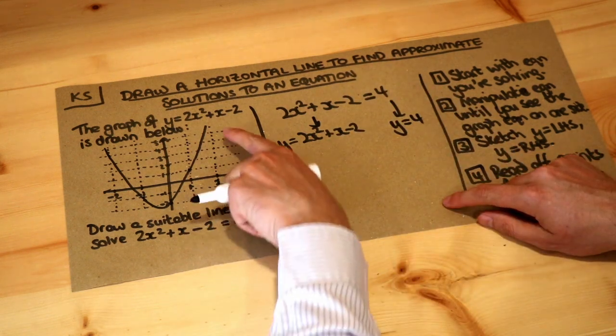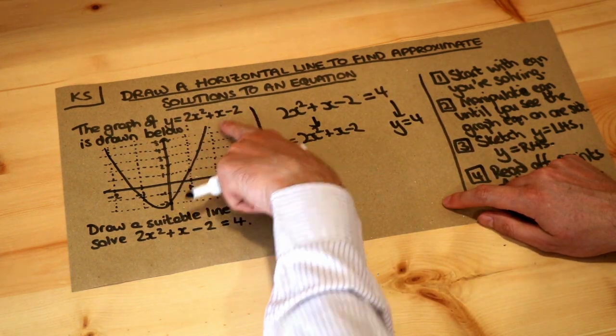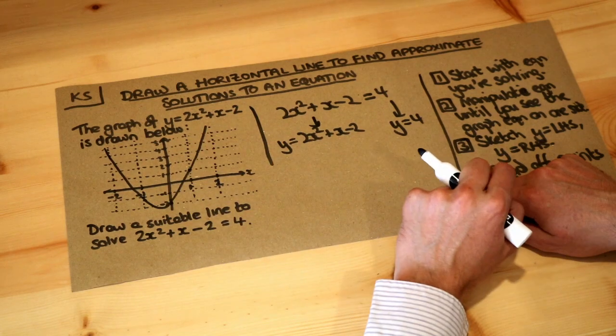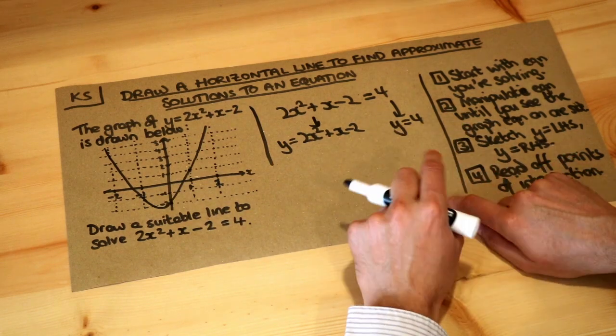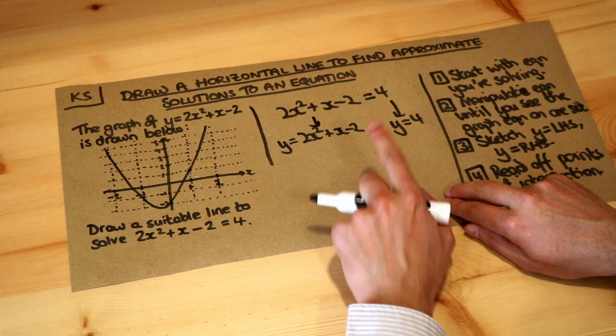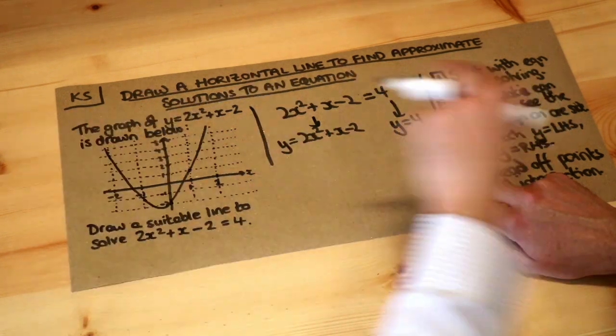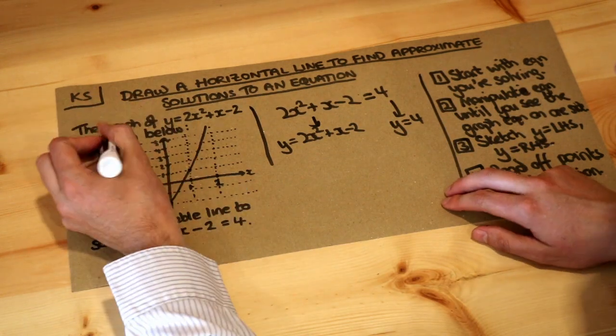Now we've already got a sketch of y equals 2x squared plus x minus 2. It's this thing here they've conveniently done for us. So we just need to sketch y equals 4. Now remember y equals 4 is a horizontal line which cuts the y axis at 4.